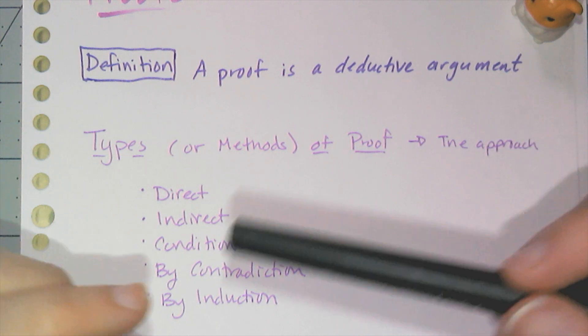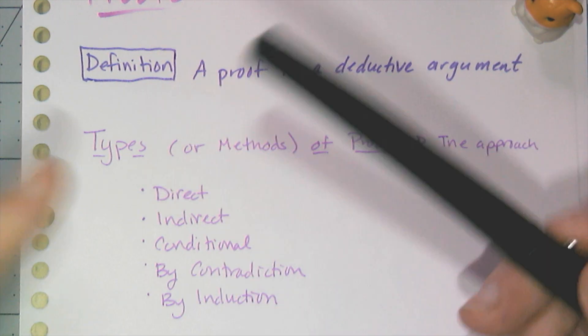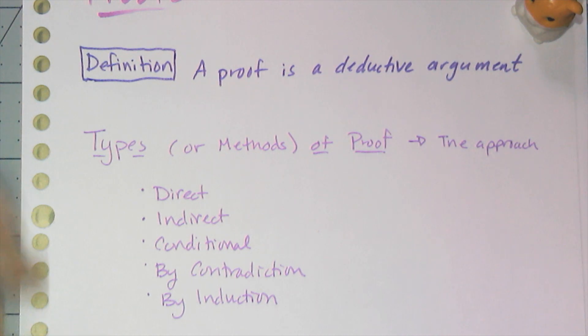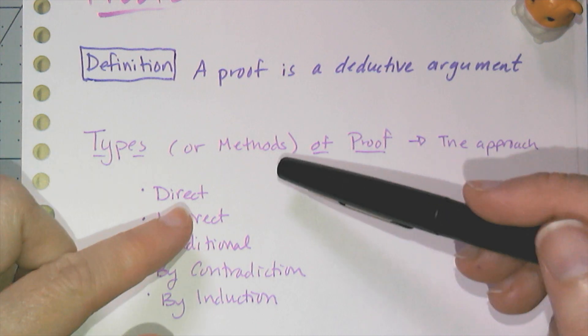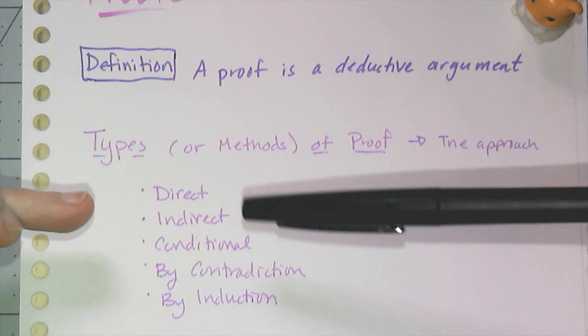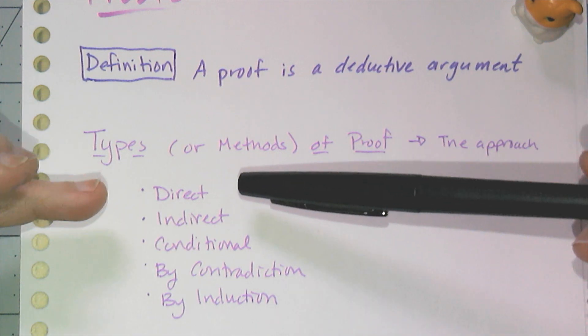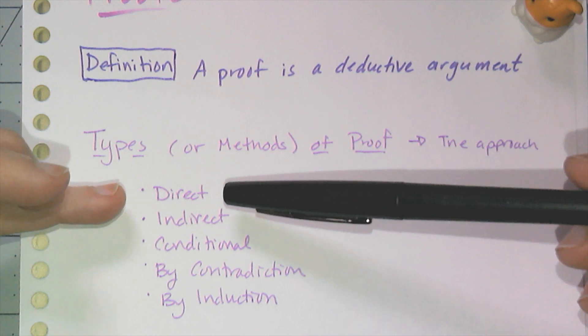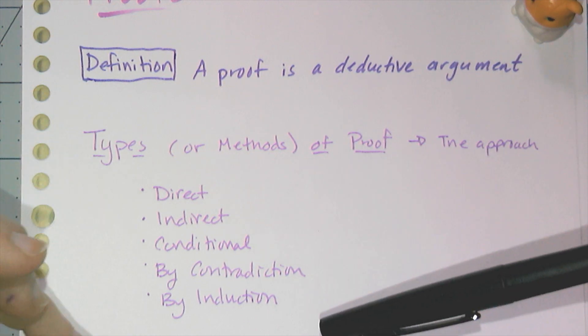And it's deductive because you have to back up what you say with facts. And there are different approaches to proofs. They're called methods or types of proof. Some that you'll see in the next few years of your math classes are direct, indirect, conditional, by contradiction, and by induction.